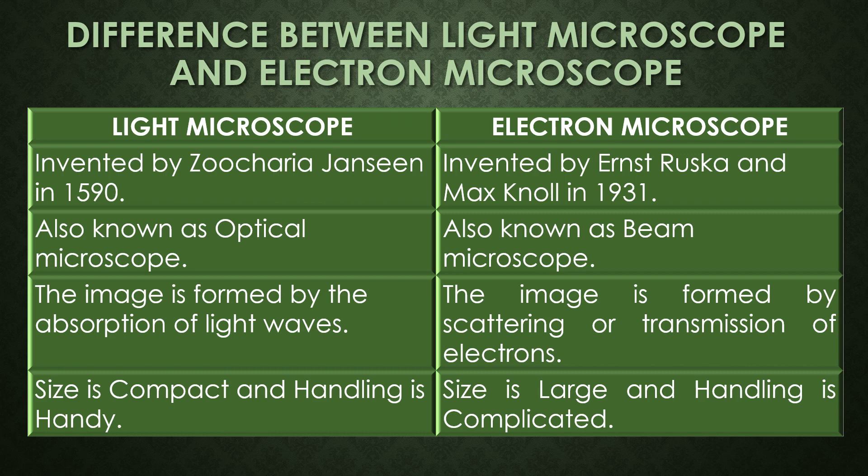Regarding the differences, the first: the light microscope was invented by Zacharias Janssen in the year 1590, and the electron microscope was invented by the scientists Ernst Ruska and Max Knoll in the year 1931. The light microscope is also known as the optical microscope and the electron microscope is also known as the beam microscope. The image in the light microscope is formed by the absorption of light waves and the image in the electron microscope is formed by the scattering or transmission of electrons.